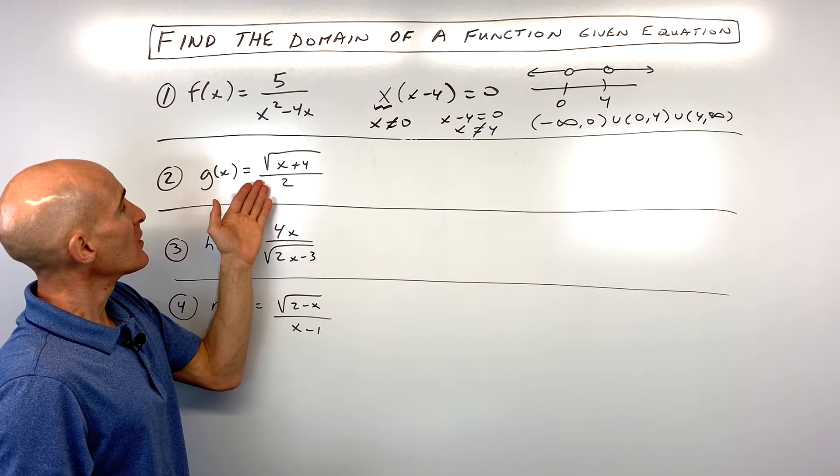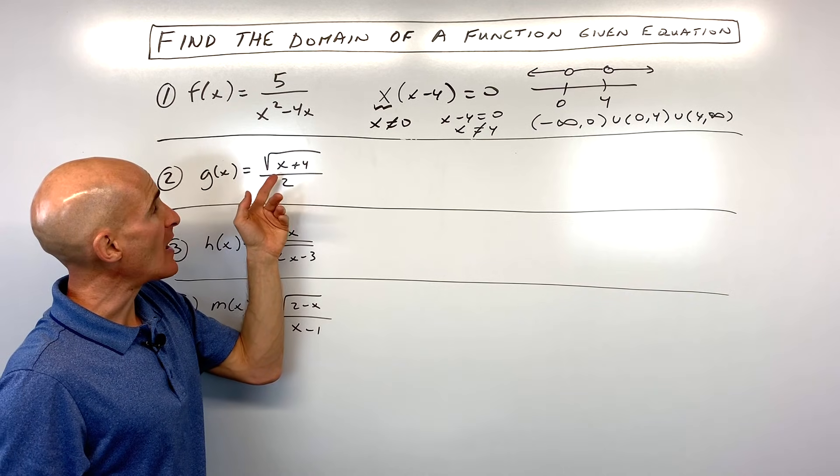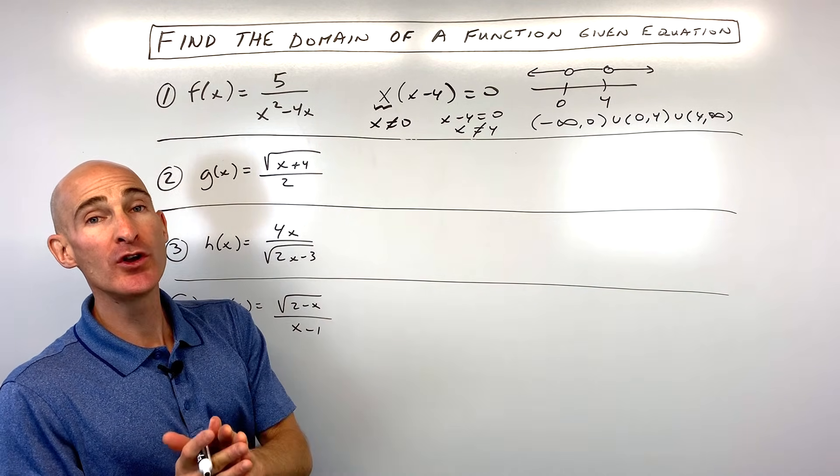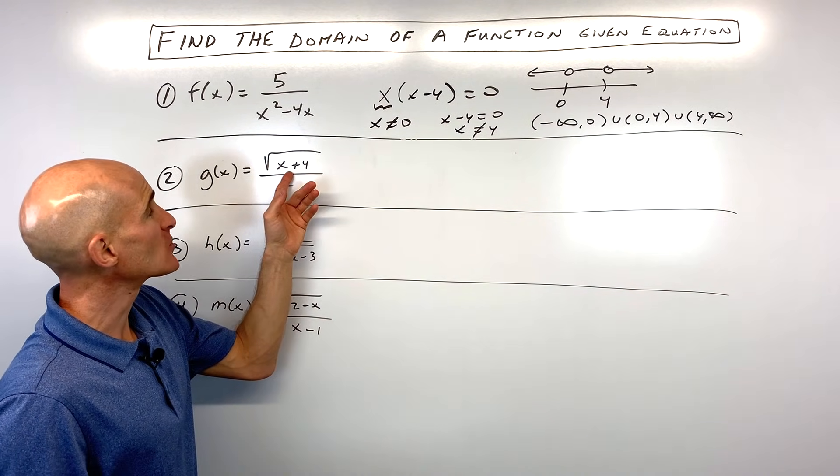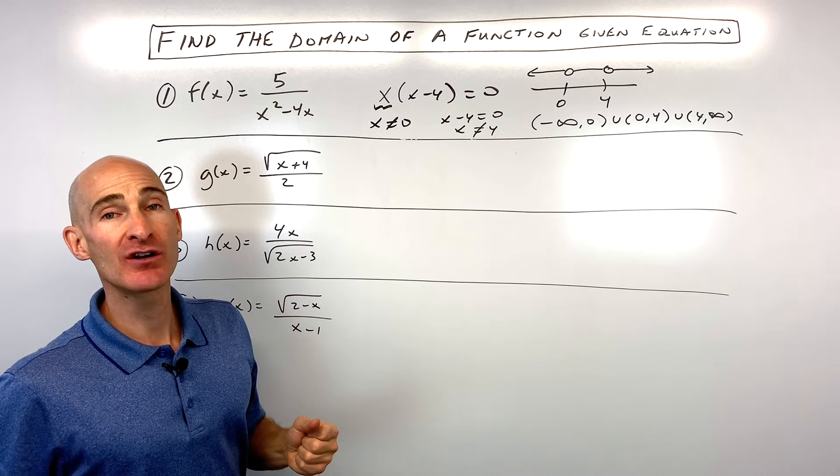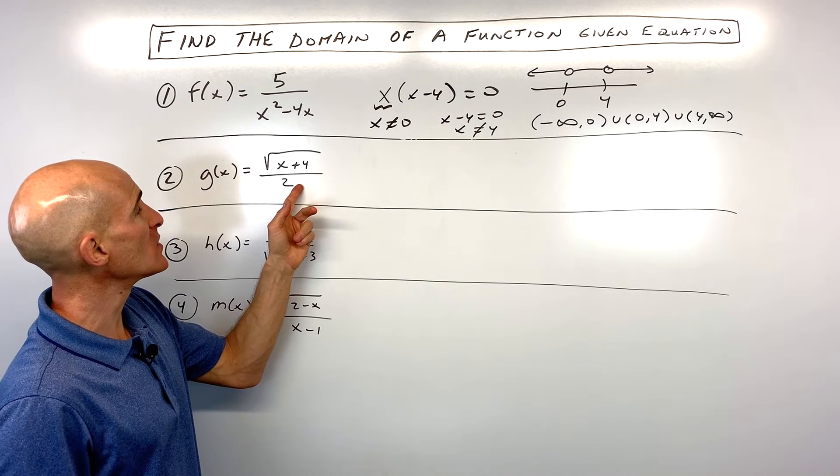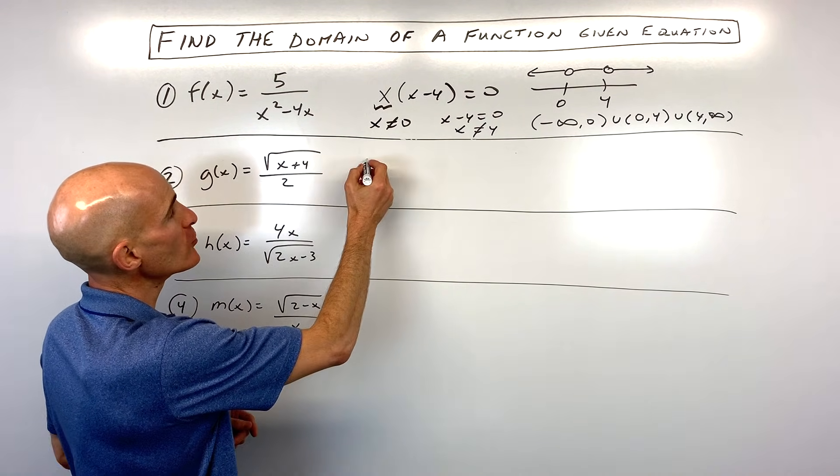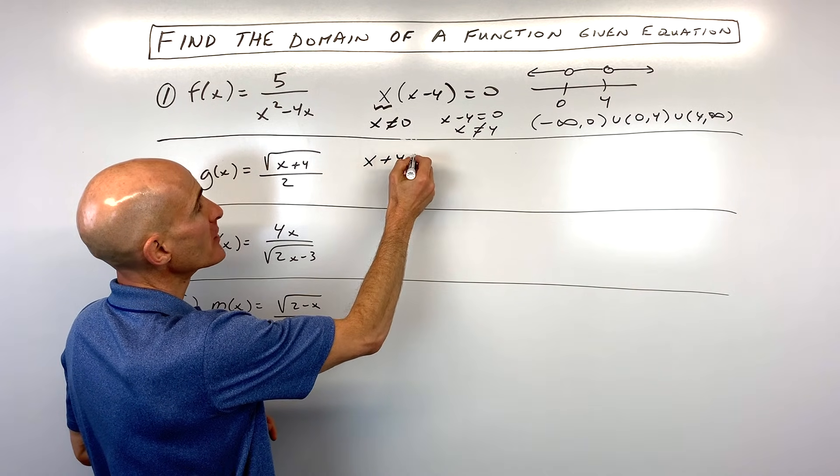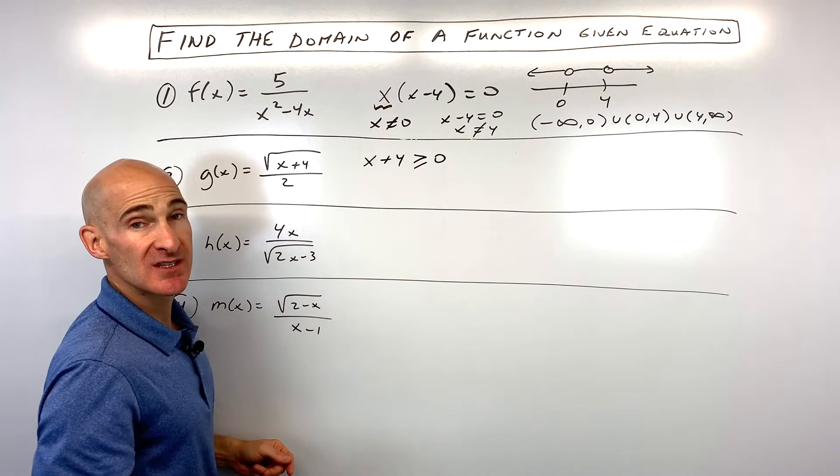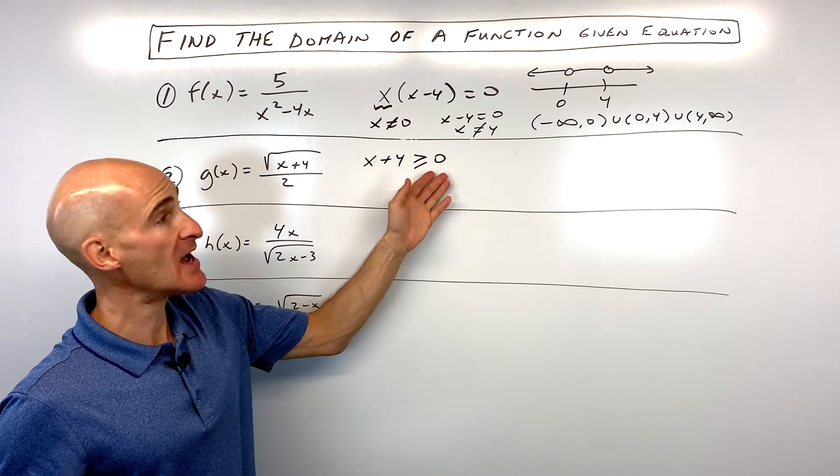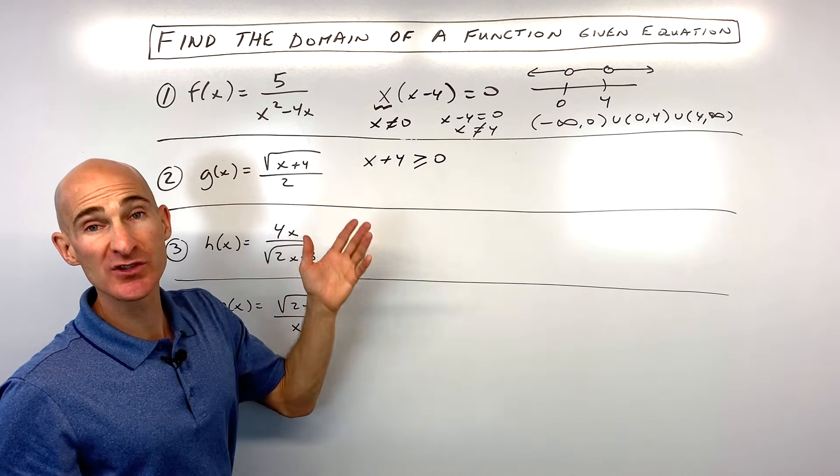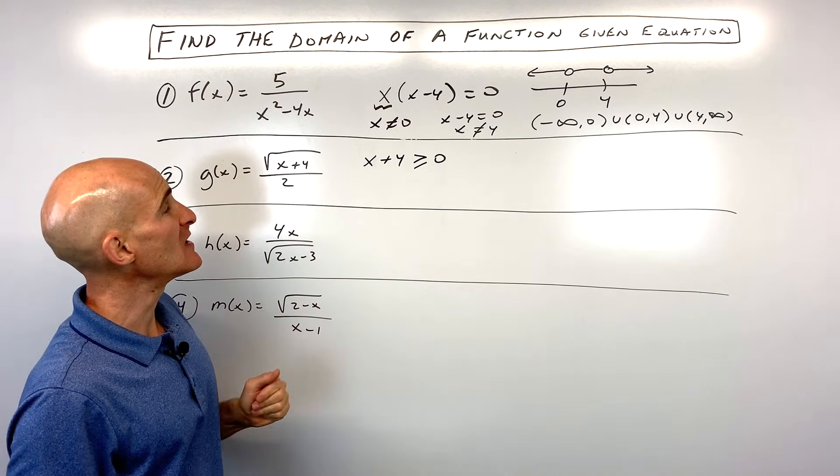So for number two, we've got a square root. So how do we handle this square root here? Well, we know that we can't take the square root of a negative number. We're going to have an imaginary value. So what we do is we say, okay, whatever's underneath that square root, let's make an inequality. Let's make it greater than or equal to zero. Greater than zero means positive. Equal to zero, the square root of zero is zero. That's okay. We just don't want it to be negative.